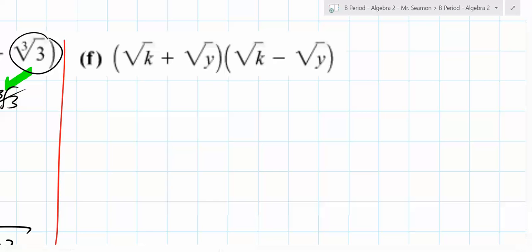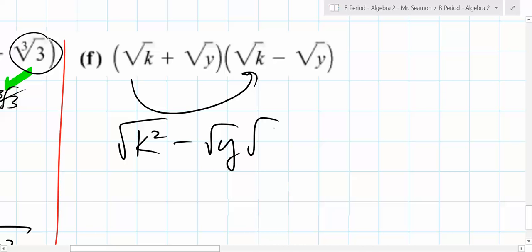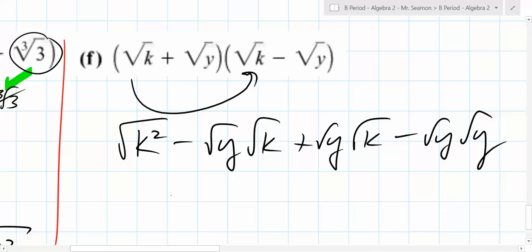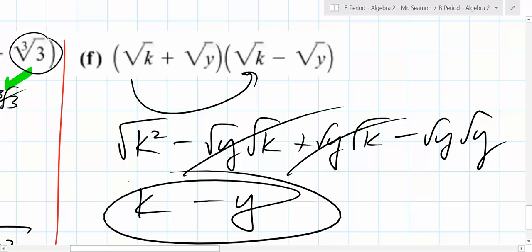What about this one? What's this come out to be? K minus y. Yeah, it just came out as y. It's awesome. Because what's root k times root k? It's going to be root k squared, which is just k. Then you get minus root y root k plus root y root k minus root y root y. These go away. So what does that become? k minus y. That's it.